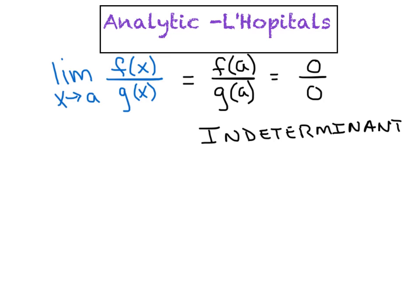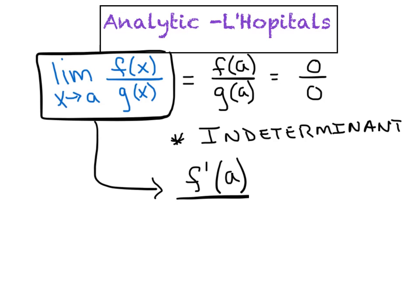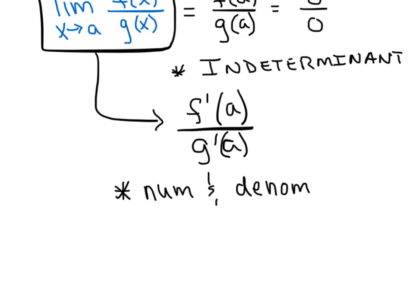And that's what we call our indeterminate form because we are unable to determine what the limit is by direct substitution. So indeterminate form right there. And what L'Hôpital's does is he swoops in and says, you know what, this limit is now equal to f prime of A divided by g prime of A. Most of the time that works, but if we did get 0 over 0 again, we could just take another derivative and another derivative. The key here is to think of the numerator and the denominator as separate functions.